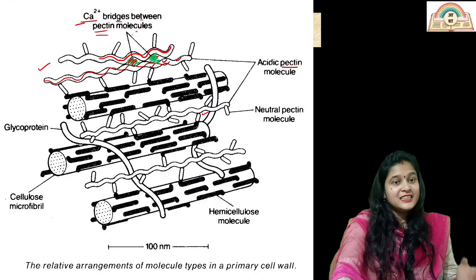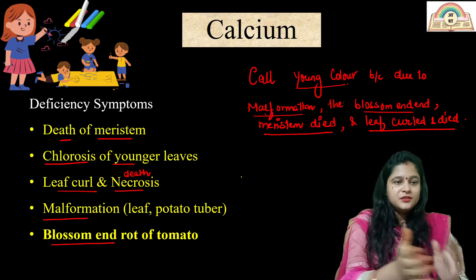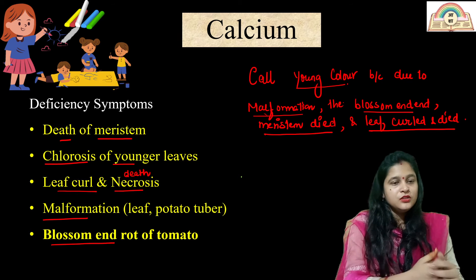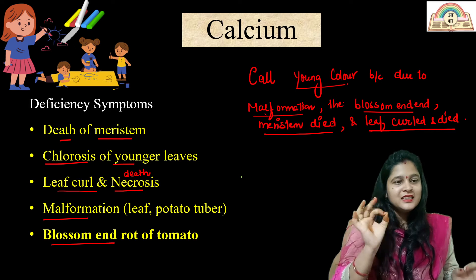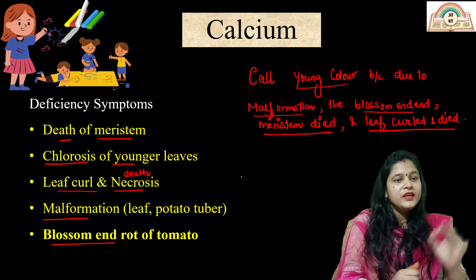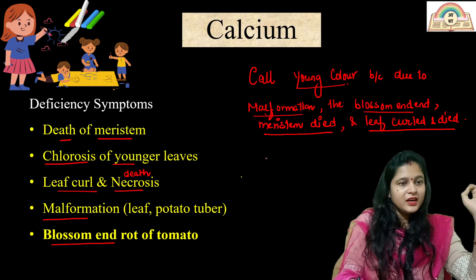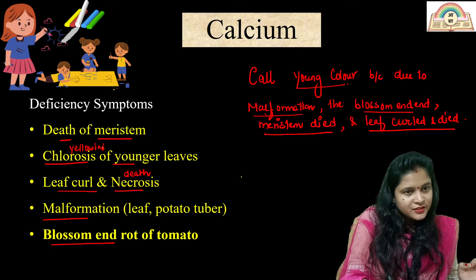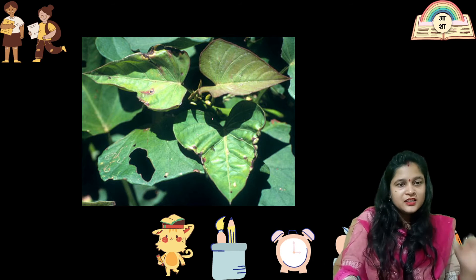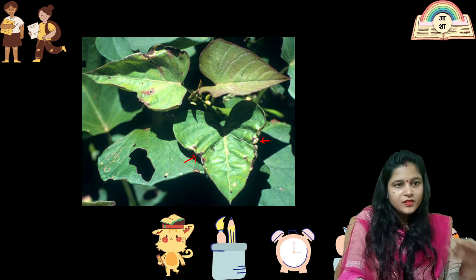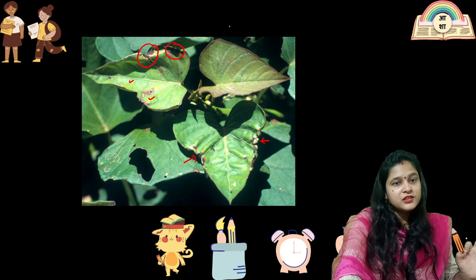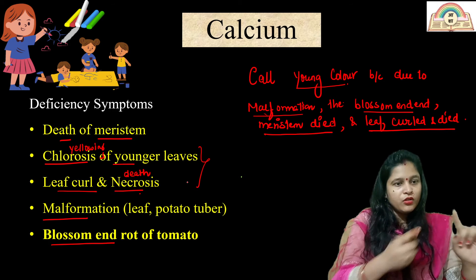The deficiency symptoms of calcium: since meristem needs calcium, if there is no calcium, meristem dies — death of meristem. Second is chlorosis (yellowing) of younger leaves, leaf curl, and necrosis (death of tissue). In the image you can see the leaf has curled, yellow spots, and dead spots — these are necrosis.